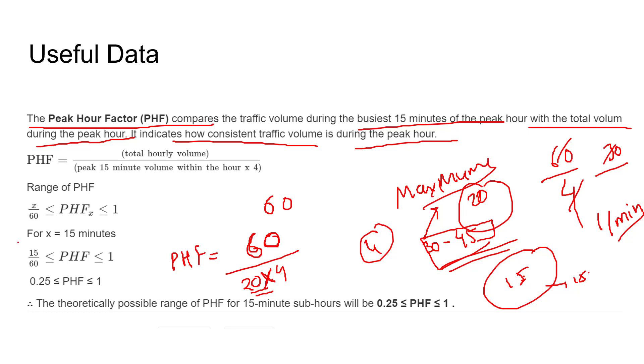And this is the range of peak hour factor. So what I explained mathematically we can write it as this: for example, x we take as 15 minutes, so 15 by 60, what I explained just now. Similarly, they have expressed in mathematics.